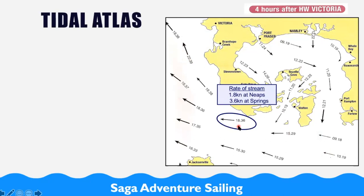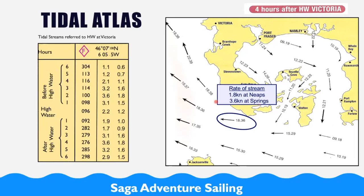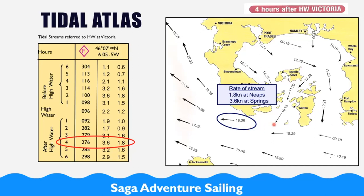On the tidal atlas it says 18.36, meaning 1.8 knots at neaps and 3.6 at springs. The thick arrows mean the tide is very strong; thin arrows mean less strong. Let's see if it tallies with the tidal diamond — going to four hours after high water you can see it tallies: 3.6 at springs and 1.8 at neaps. You can find the same information both ways. I personally prefer the tidal stream atlas because it's much easier to see what the tide is doing as you flip through the pages.